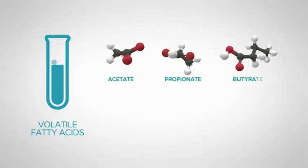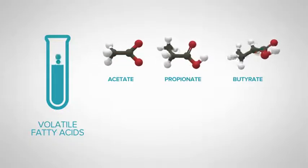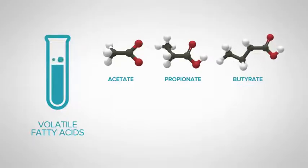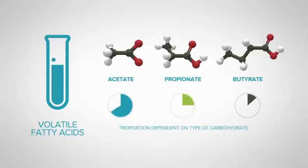or more often called acetate, propionate, and butyrate. The proportion of each of these acids depends on the type of carbohydrate that the cow has eaten, and to a lesser extent, the rumen environment.